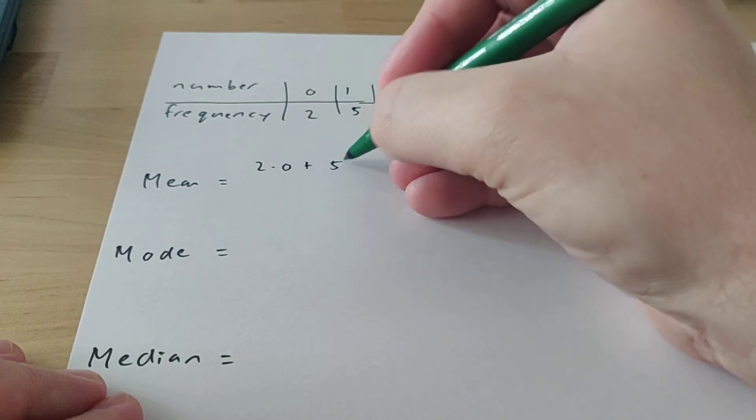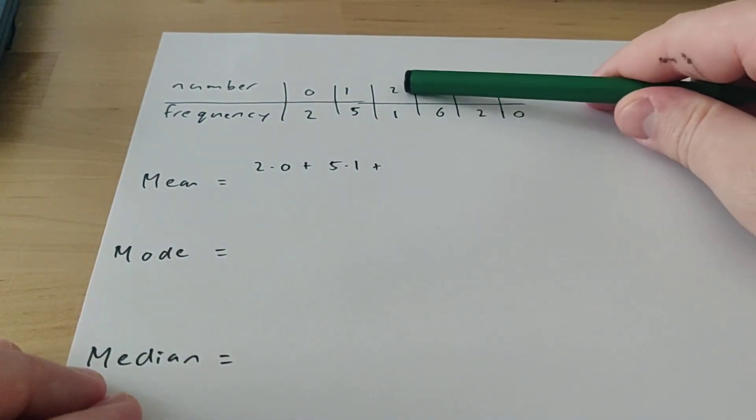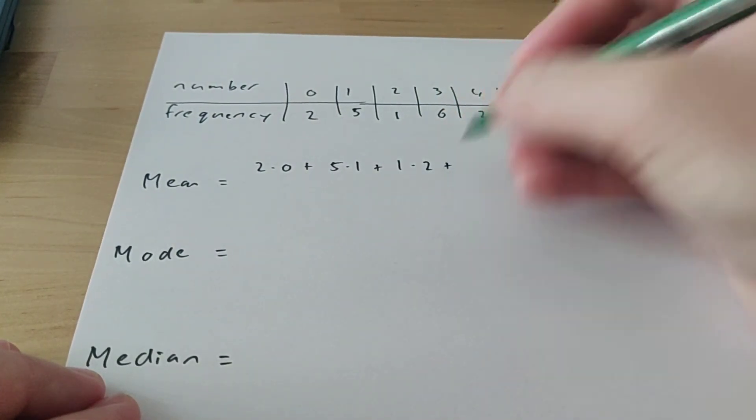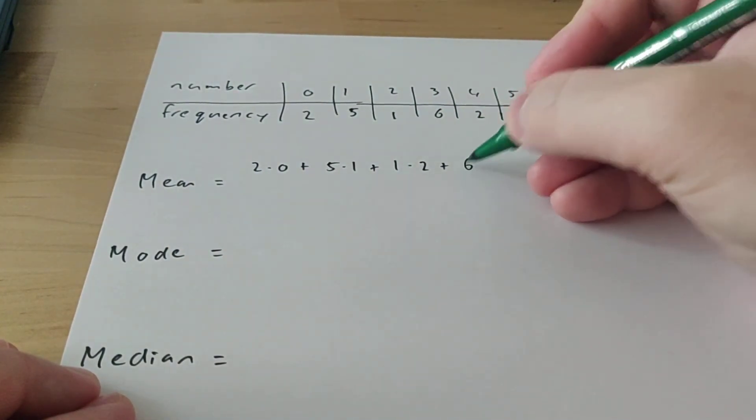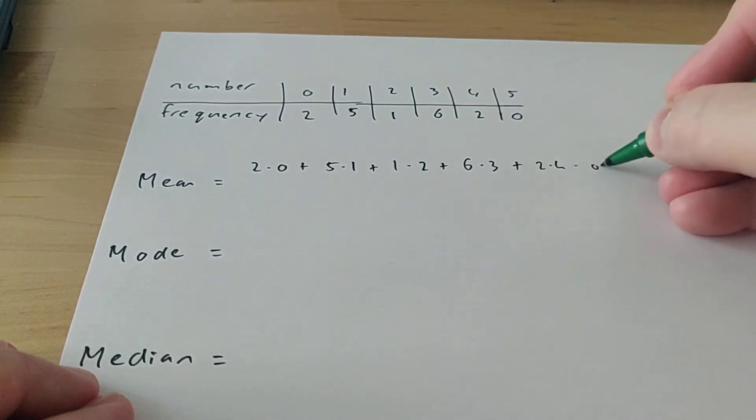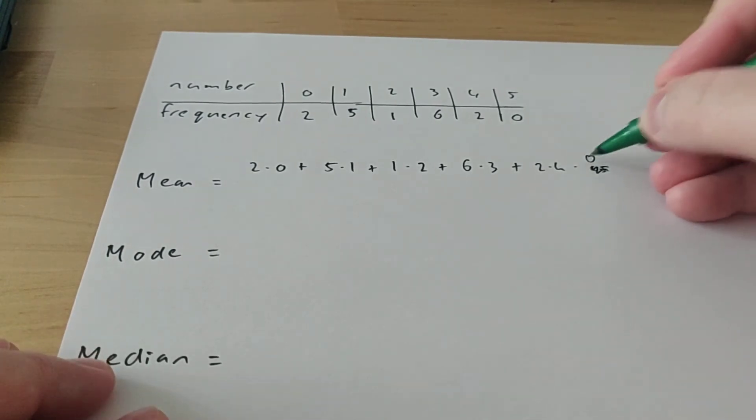1 happens 5 times, so you're going to do 5 times 1. 2 happened once, so you're going to do 1 times 2. Then 3 happened 6 times, so you're going to do 6 times 3. And then you're going to do 2 times 4, and 0 times 5. Okay, I wrote that down a bit weird, let me do it again. 0 times 5, yes.